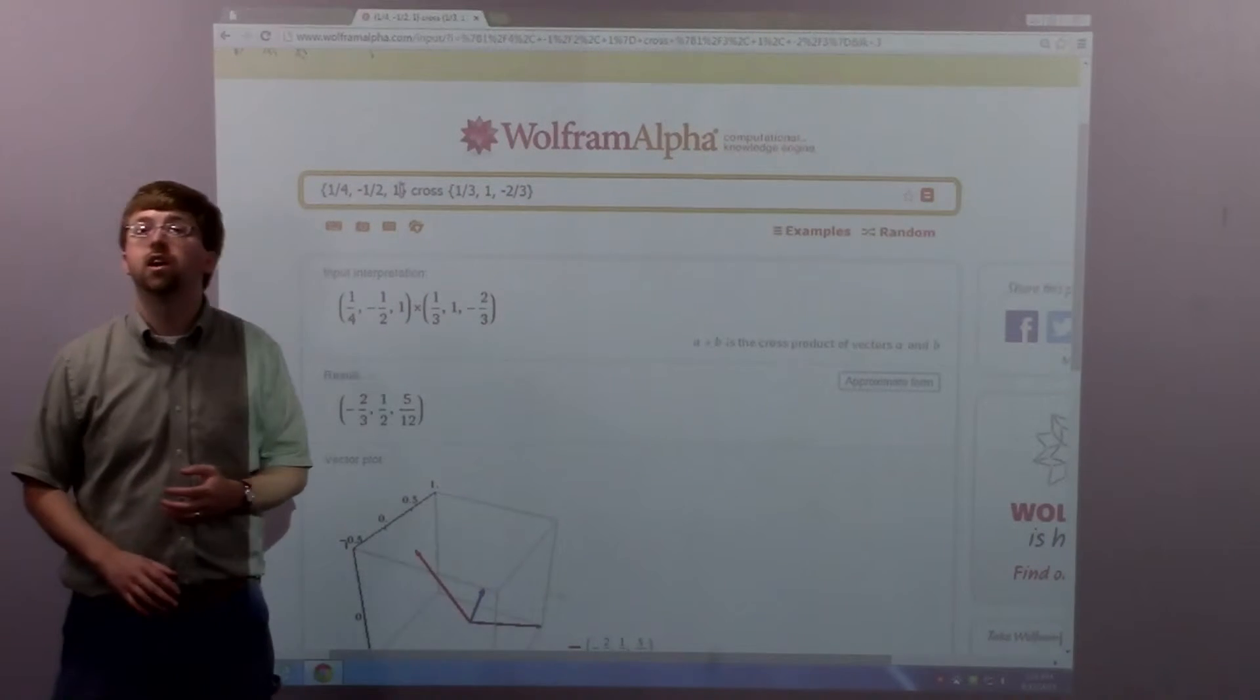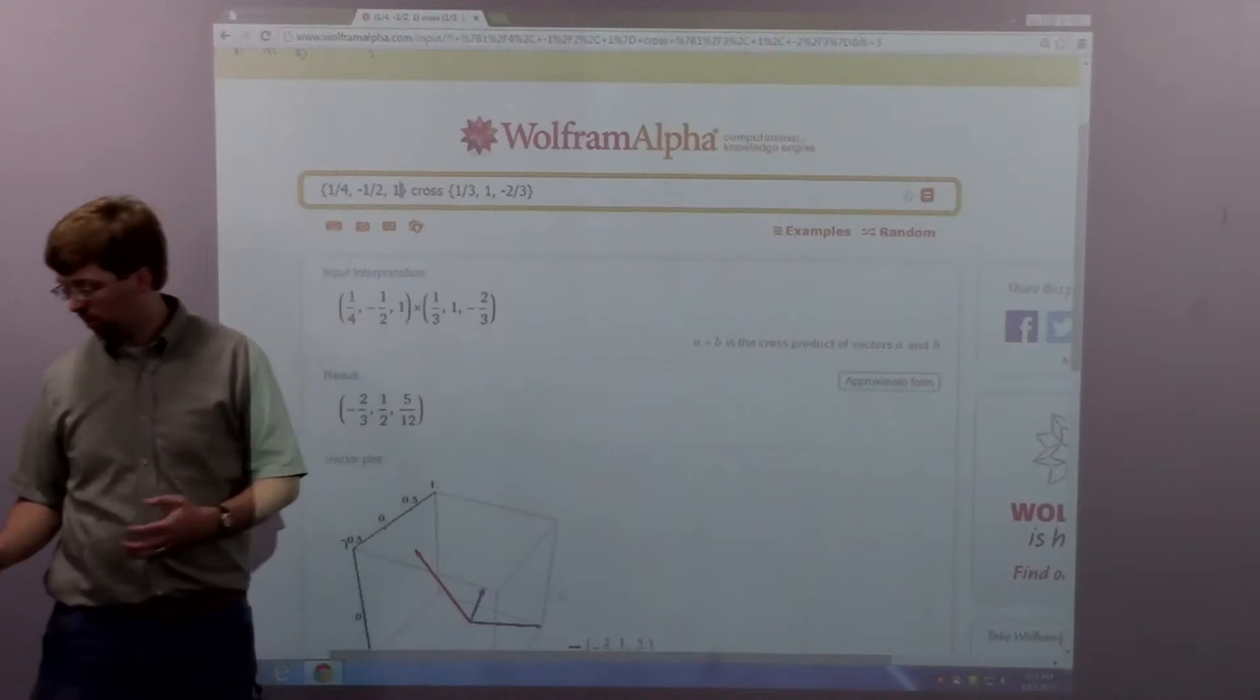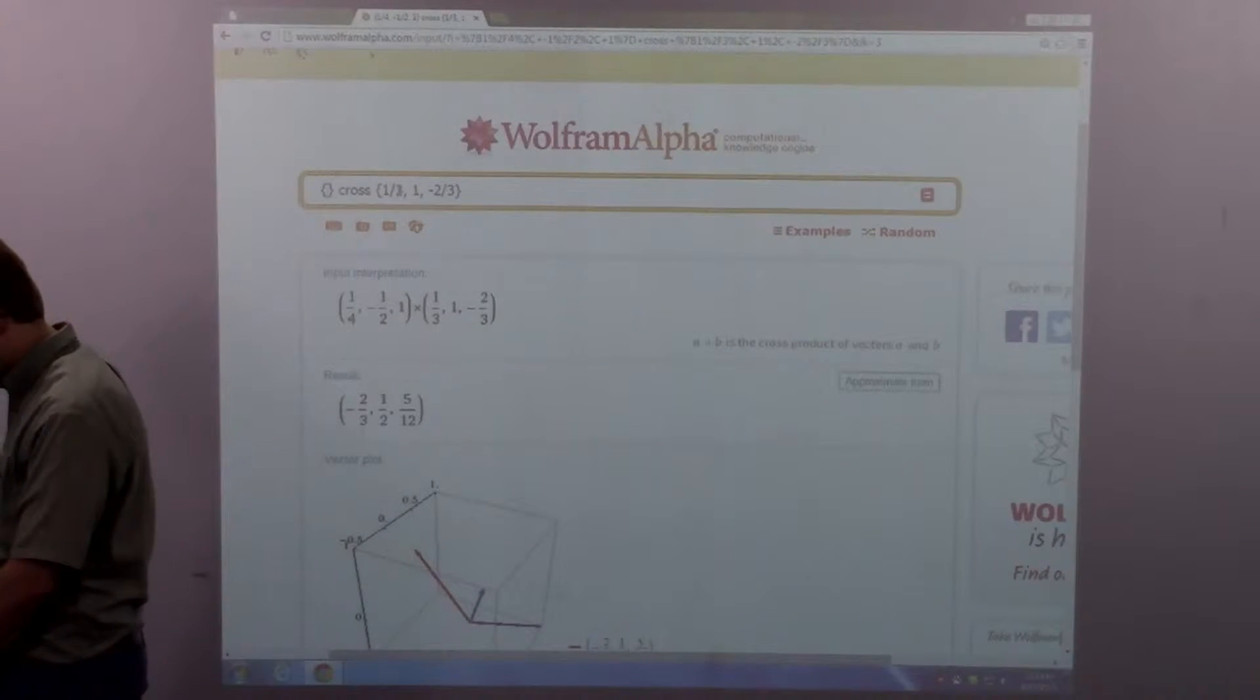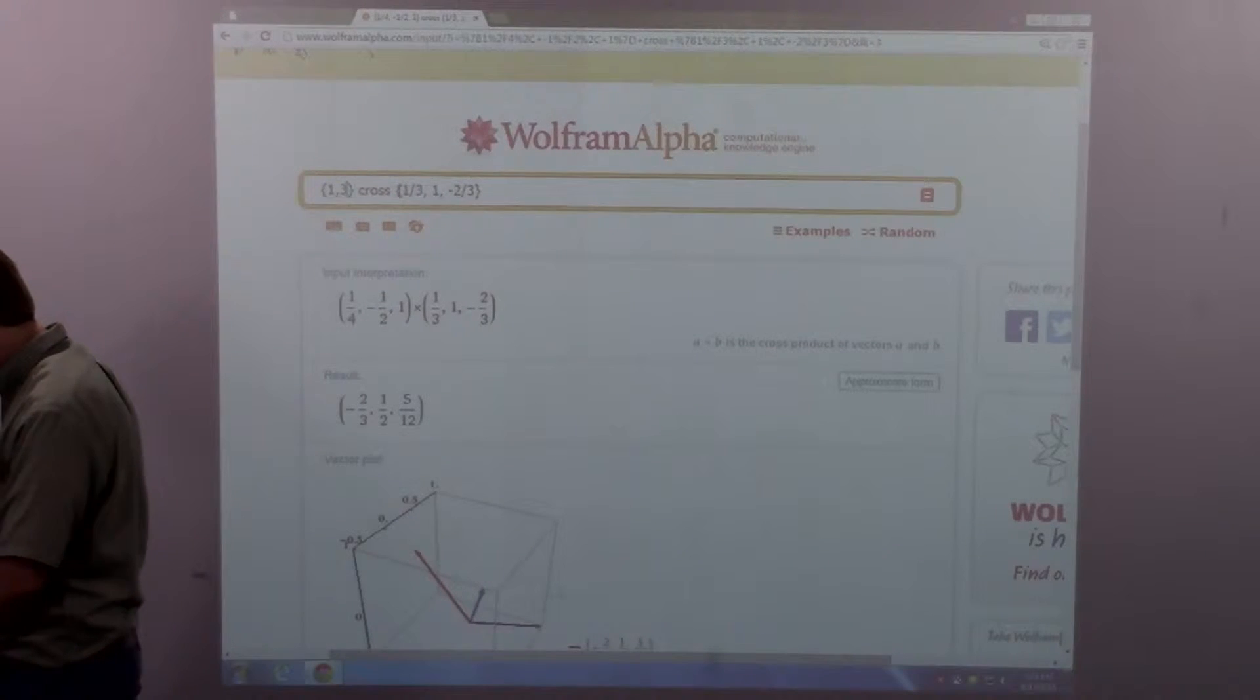And over here, on the top, is where I am going to enter my vector. Between the first brackets, this is going to be Vector A: 1, 3, 5.